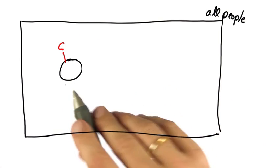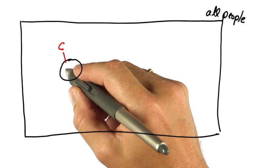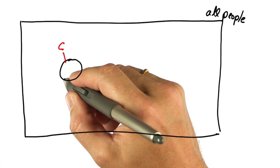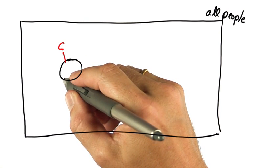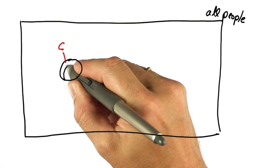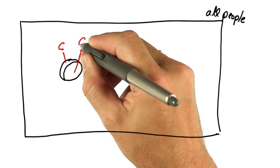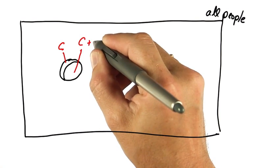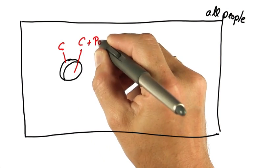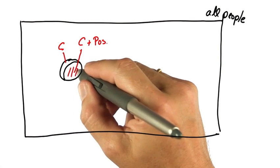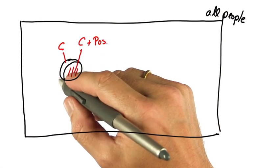We know there's a test that if you have cancer, correctly diagnoses it with 90% chance. So if you draw the area where the test is positive, cancer and test positive, then this area over here is 90% of the cancer circle.